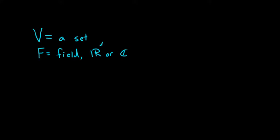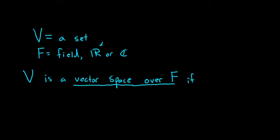So if you like, you can just think of it as the real numbers every single time. And we'll say V is a vector space over F. So it's a vector space over a field. So over F if there are two operations associated with V. So if there are two operations, one is called addition or vector addition. So I'll just say addition.